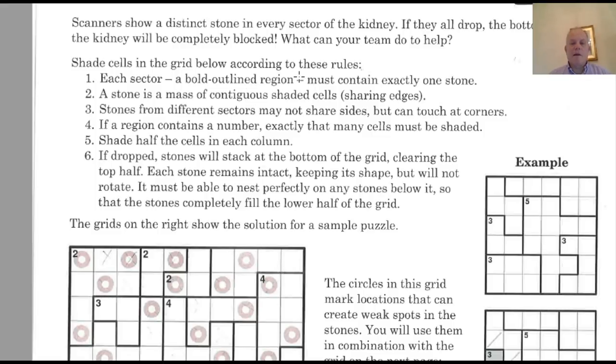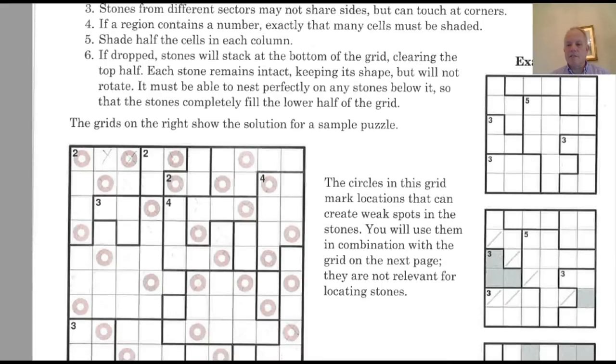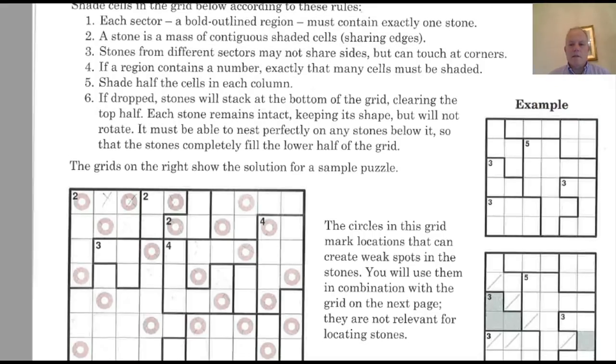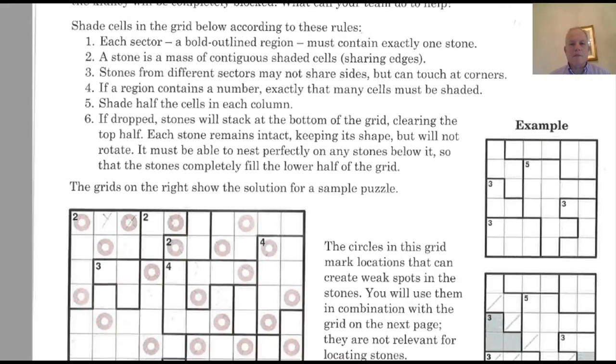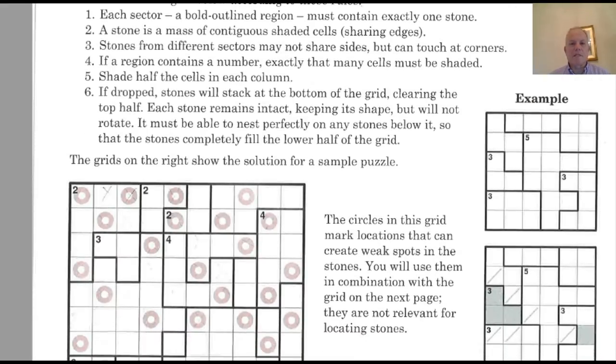Shade cells in the grid below according to these rules. Each sector must contain exactly one stone. These are the regions provided. A stone is a mass of contiguous shaded cells sharing edges. So in their example puzzle, for instance, there's two stones here. One is an L shape, one is just one cell. So those are stones. They could be any shape and size. Look, they get quite bigger further on into the puzzle. But they must all touch and be within a sector.